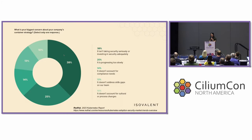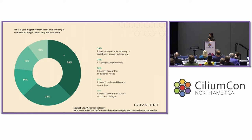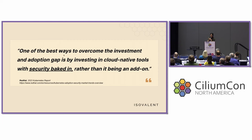I want to take a step back first and look at the state of security and how things have been evolving. With the shift to containerization, security has become a large concern for a lot of organizations. Red Hat released a report where many teams are concerned that they're not taking security adequately enough. One quote from this report really stood out: one of the best ways to overcome the investment and adoption gap is investing in cloud-native tools with security baked in, rather than it being an add-on. And this is one of Cilium's core principles as such a strong CNI.